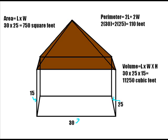Now we need to calculate the area, the perimeter, and volume of my house. Recall that the length was 30 feet, the height was 15 feet, and the width was 25 feet.